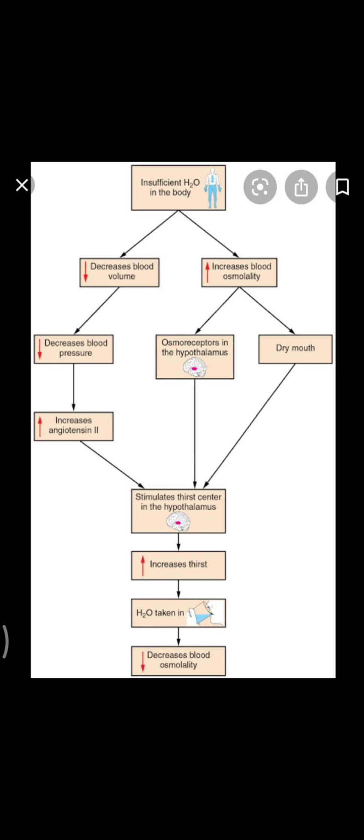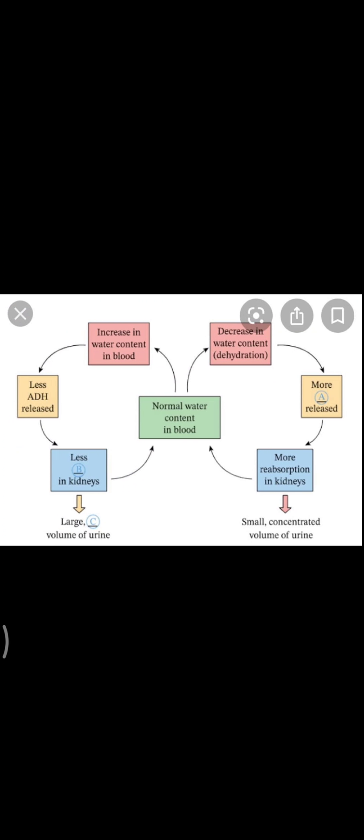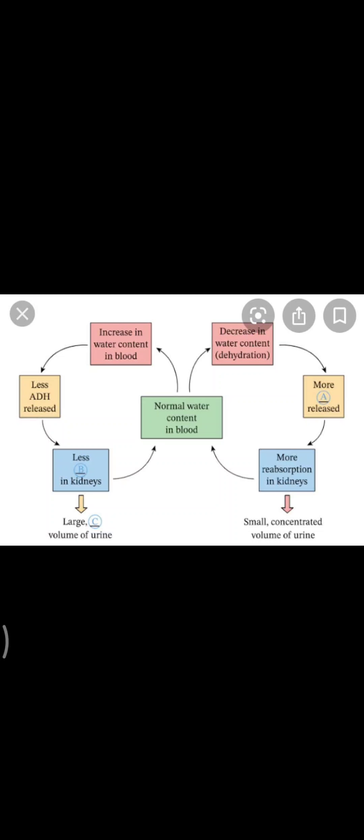The hormonal regulation or vasopressin regulation has already been learned in standard 10 under osmoregulation, so we will repeat it again. The JGA and angiotensin mechanism is a different one. Let us begin with the first mechanism — the hormonal feedback mechanism. This involves the hypothalamus, and you can see that the body has osmoreceptors.